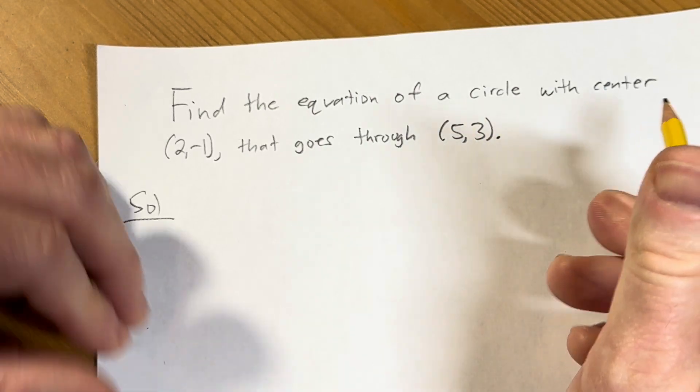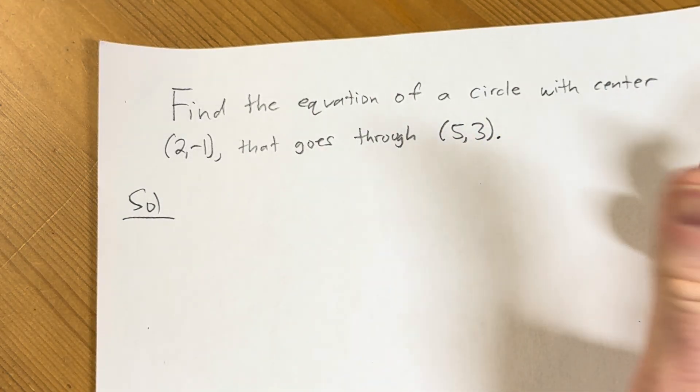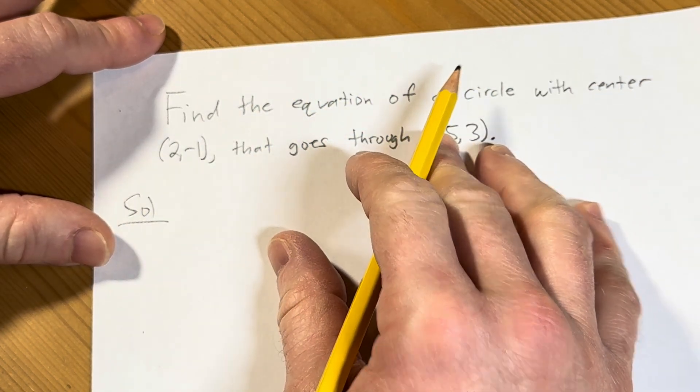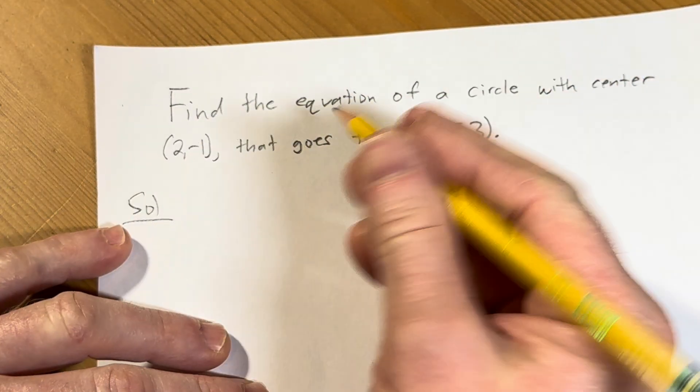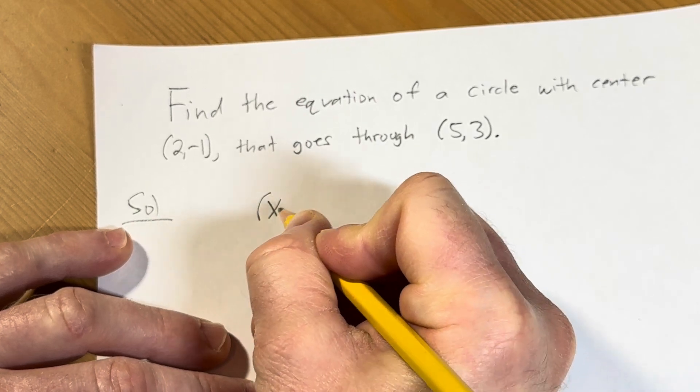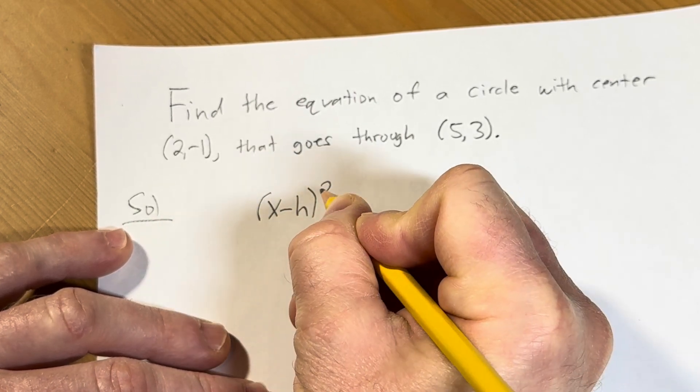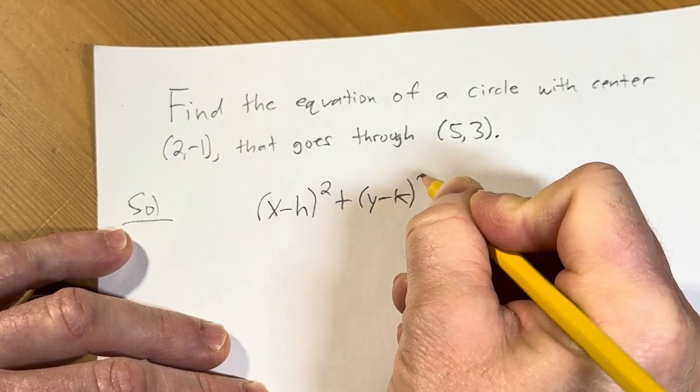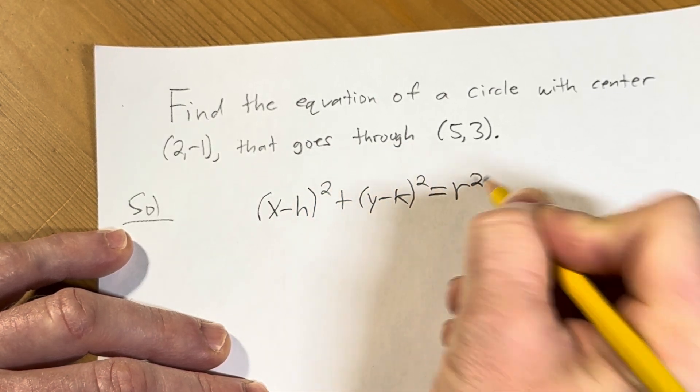So let's start off by writing down the equation of a circle. It's really important to know the formula because once you know the formula, that can kind of help you figure out what you need and what's missing. So the formula for the equation of a circle is (x - h)² plus (y - k)² equals r².